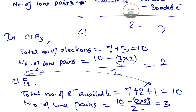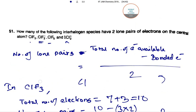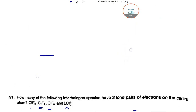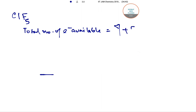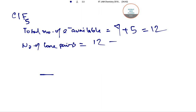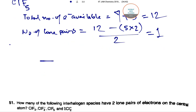The next compound is CLF5. The total number of electrons available for CLF5 equals 7 plus 5, which equals 12. The number of lone pairs equals 12 minus the bonded electrons: there are 5 bonds, so 5 into 2 gives 10 bonded electrons. Dividing: 12 minus 10 divided by 2 equals only 1 lone pair.